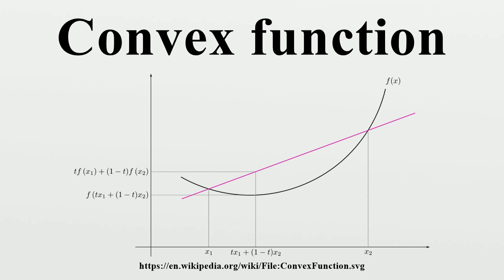In probability theory, a convex function applied to the expected value of a random variable is always less than or equal to the expected value of the convex function of the random variable. This result, known as Jensen's inequality, underlies many important inequalities. Exponential growth is a special case of convexity.